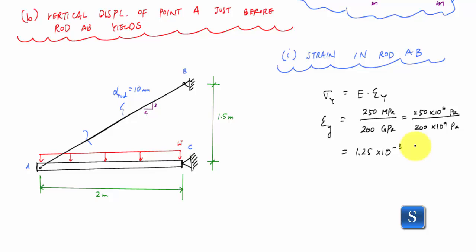There are no units for strain. If you need units, you can put any units you want. You can put length over length, so we'll put millimeter over millimeter. And so now I know the strain in my rod AB at the instant just before the rod yields.